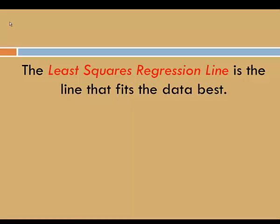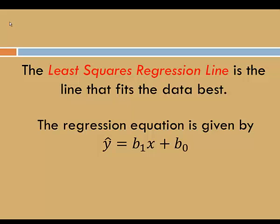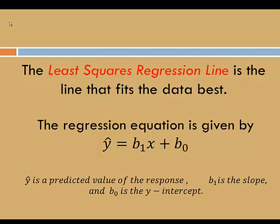The least squares regression line is the line that fits the data best. The regression equation is given by y-hat equals b1x plus b0, where y-hat is a predicted value of the response, b1 is the slope, and b0 is the y-intercept.